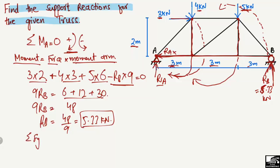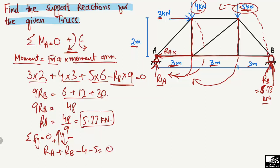Now to find RA, we use the equilibrium equation: summation of vertical forces equal to zero. Upward forces are taken as positive and downward forces as negative. The upward forces are RA and RB, so RA plus RB is positive. The downward forces are 4 kilonewtons and 5 kilonewtons, so minus 4 minus 5 equals zero.